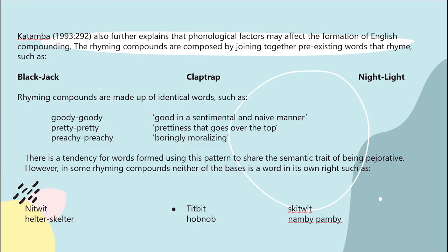Kotamba also further explains that phonological factors may affect the formation of English compounding. The rhyming compounds are composed by joining together pre-existing words that rhyme, such as blackjack, claptrap, and nightlight.